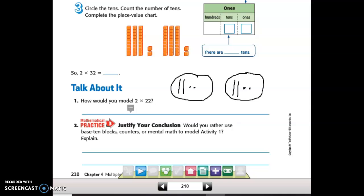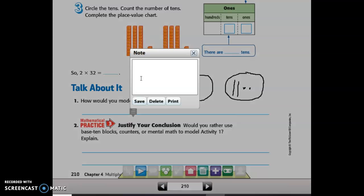And to write that in word form, I would say, draw two groups. In each group, draw two tens and two ones. And that would be the word form of the picture that I drew there.